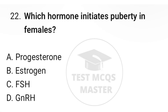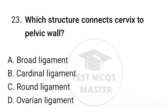Question number twenty-two: which hormone initiates puberty in females? The correct option is D, GnRH. Question number twenty-three: which structure connects the cervix to the pelvic wall? The correct option is B, cardinal ligament.